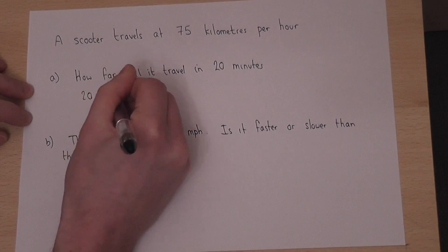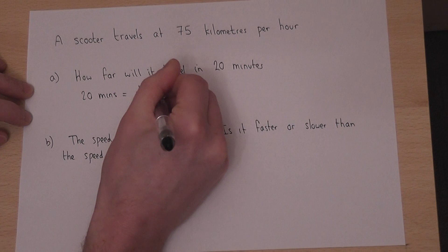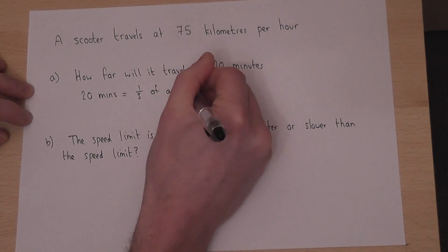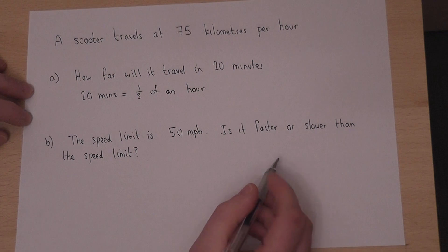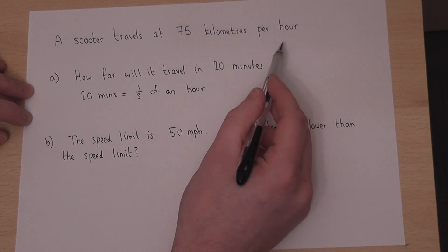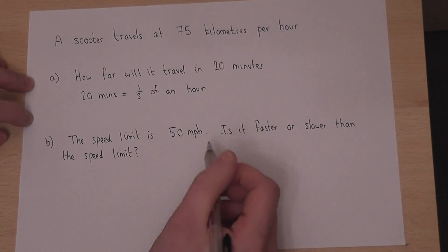20 minutes is one third of an hour, because an hour is 60 minutes. So if the scooter will travel 75 kilometers in one hour, then in 20 minutes it will do one third of this distance.